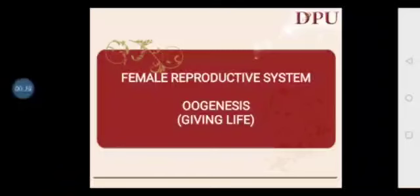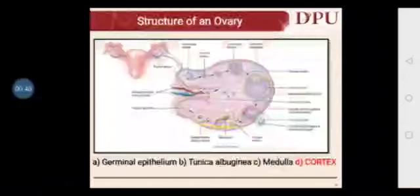Imagine if there was no oogenesis — there would be no development of ovarian follicles, there would be no production of ovum, then how would the sperm fertilize and how would new life begin? So oogenesis is very important. Before understanding oogenesis, we need to understand the structure of the ovary because all oogenesis takes place inside the ovary.